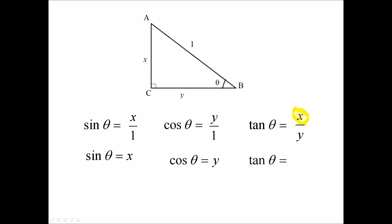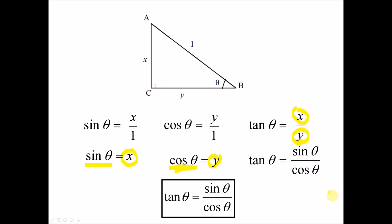Since X equals sine θ and Y equals cosine θ, we can substitute: tangent θ equals sine θ over cosine θ. This is the fundamental relationship between the three trigonometric ratios.